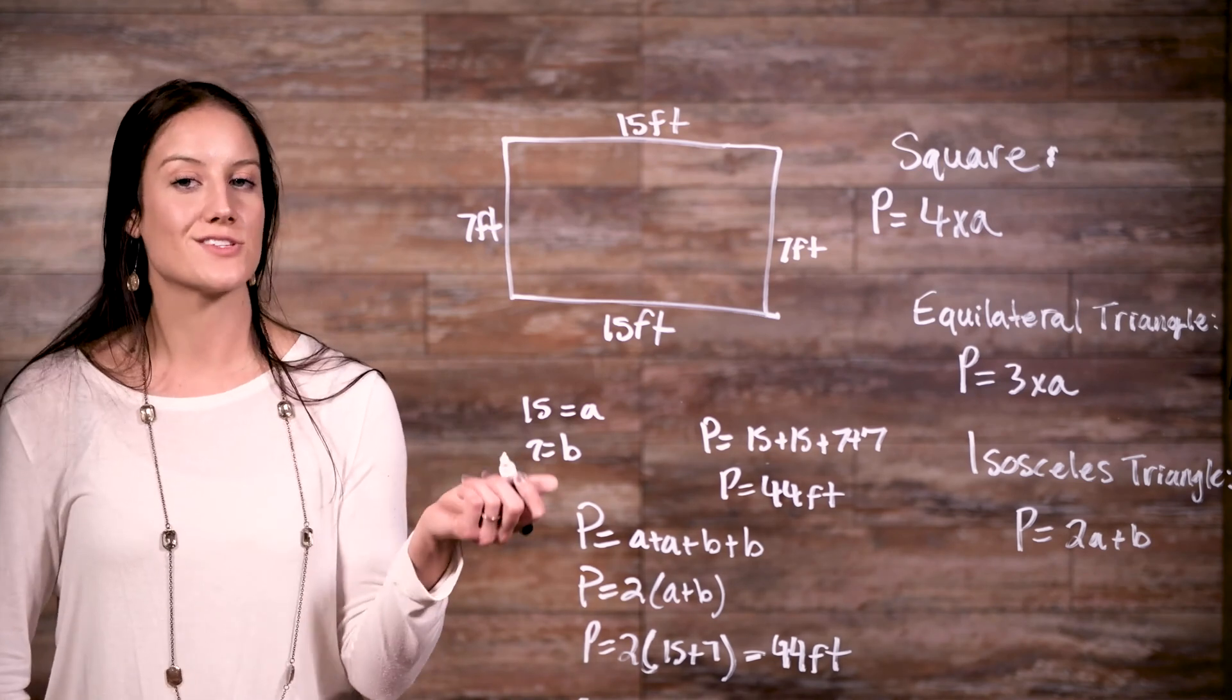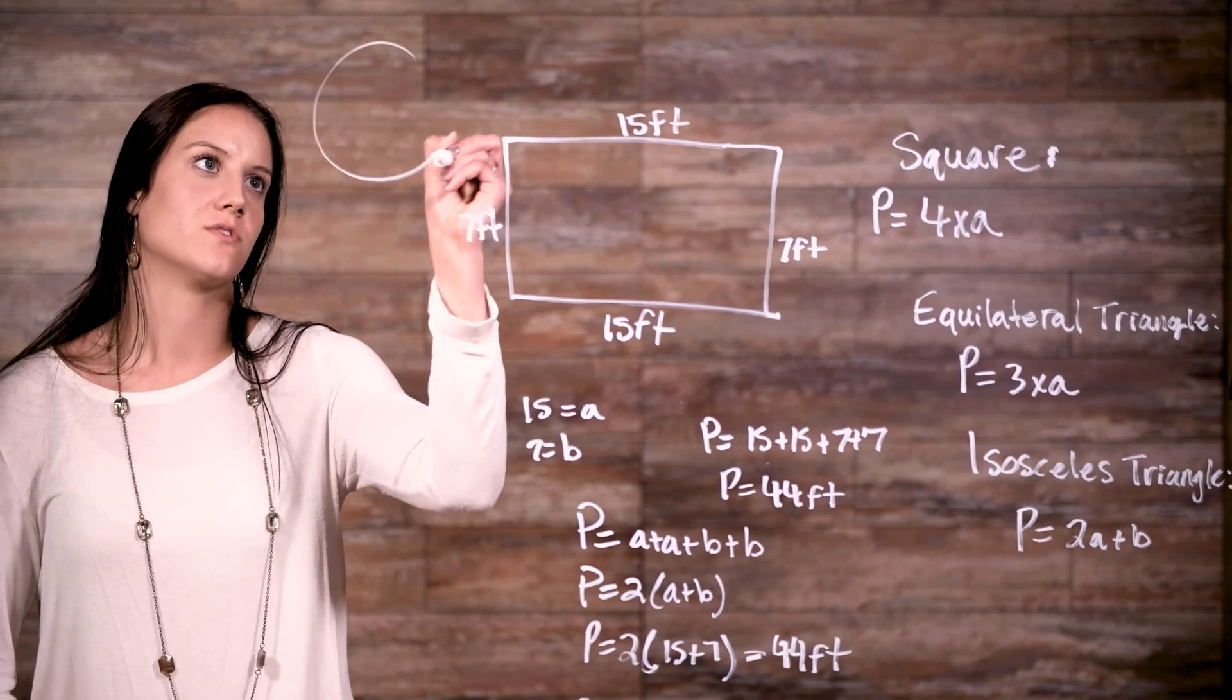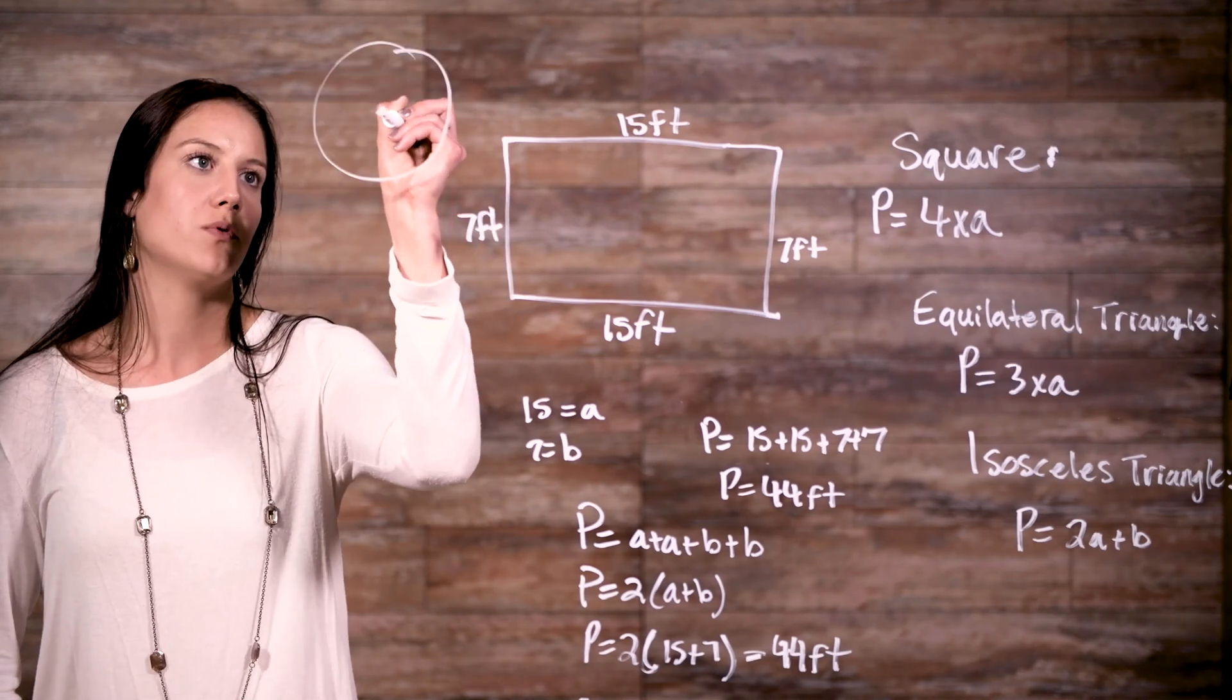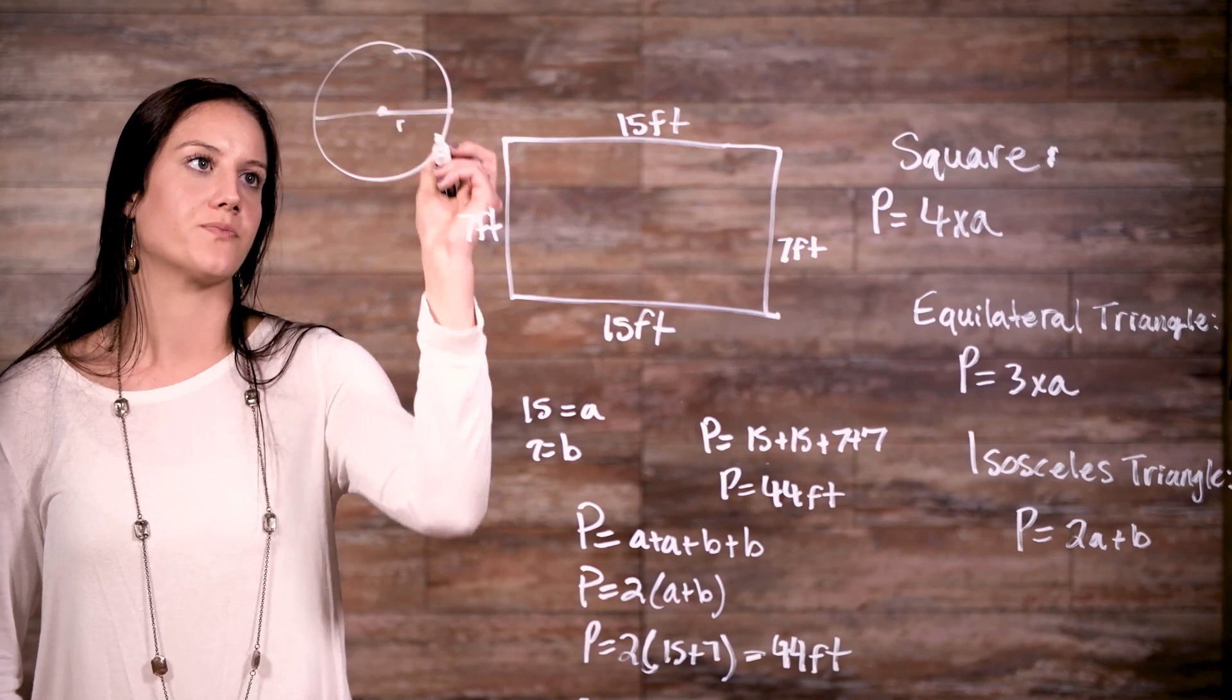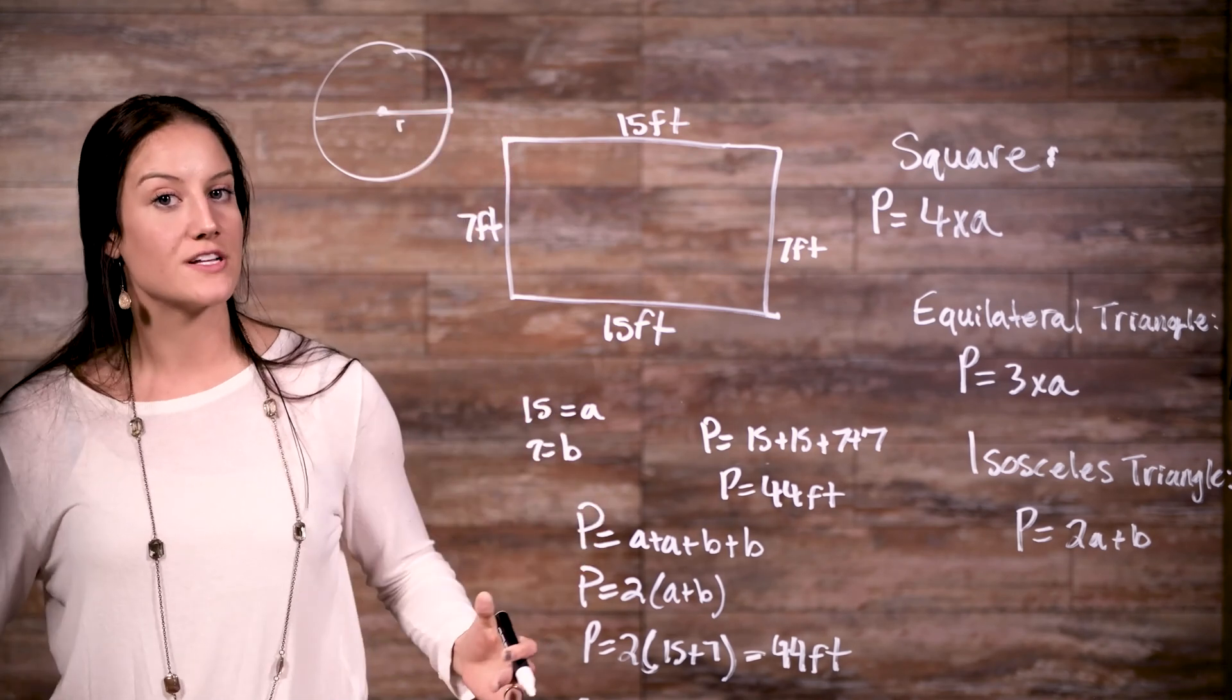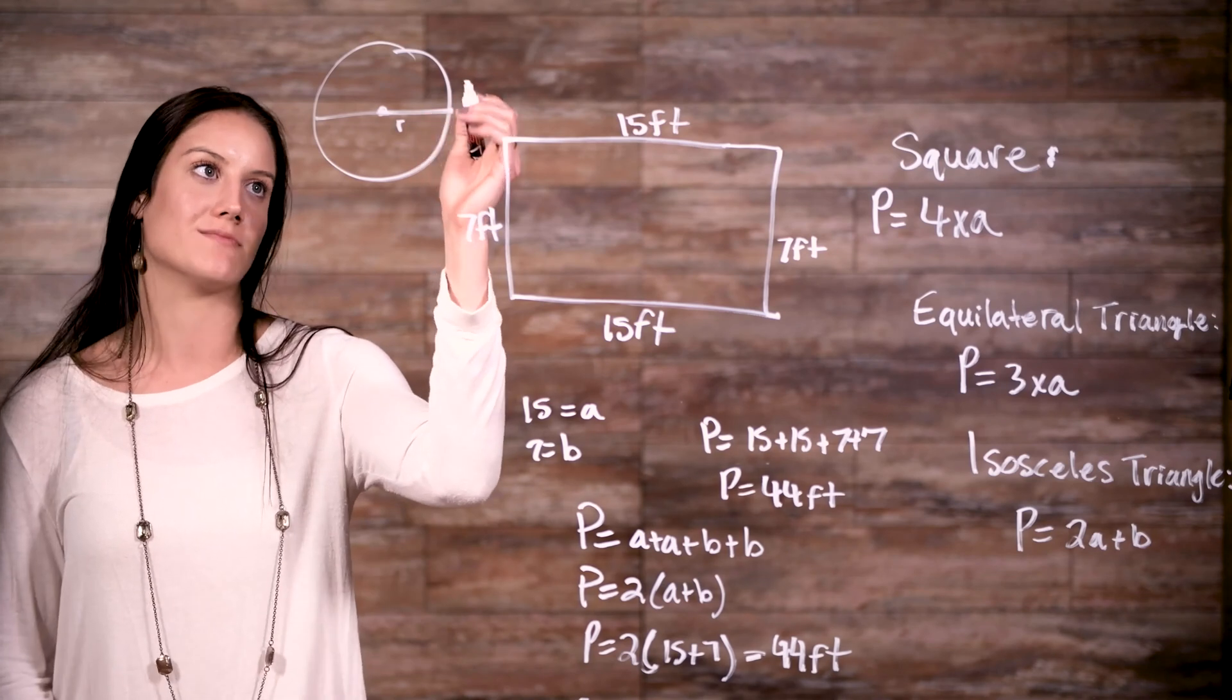To find the circumference of a circle, first you draw your circle. So you have your midpoint, diameter, and then your radius. Well, to find the circumference, you multiply the diameter times pi.